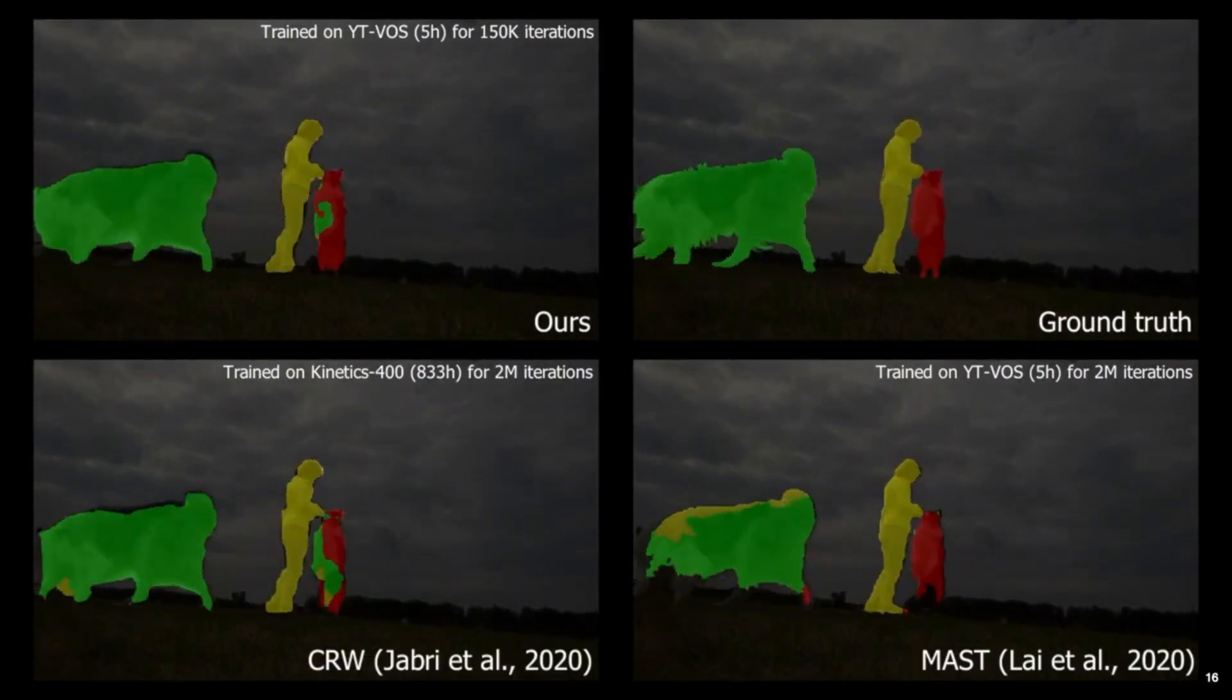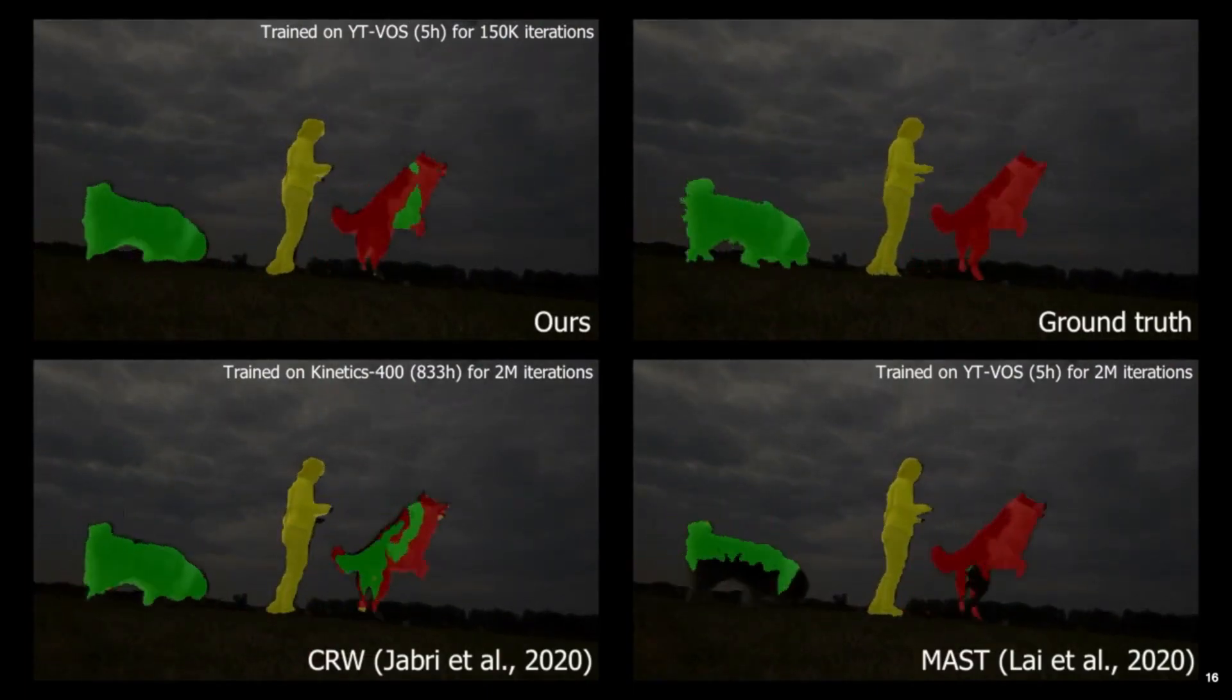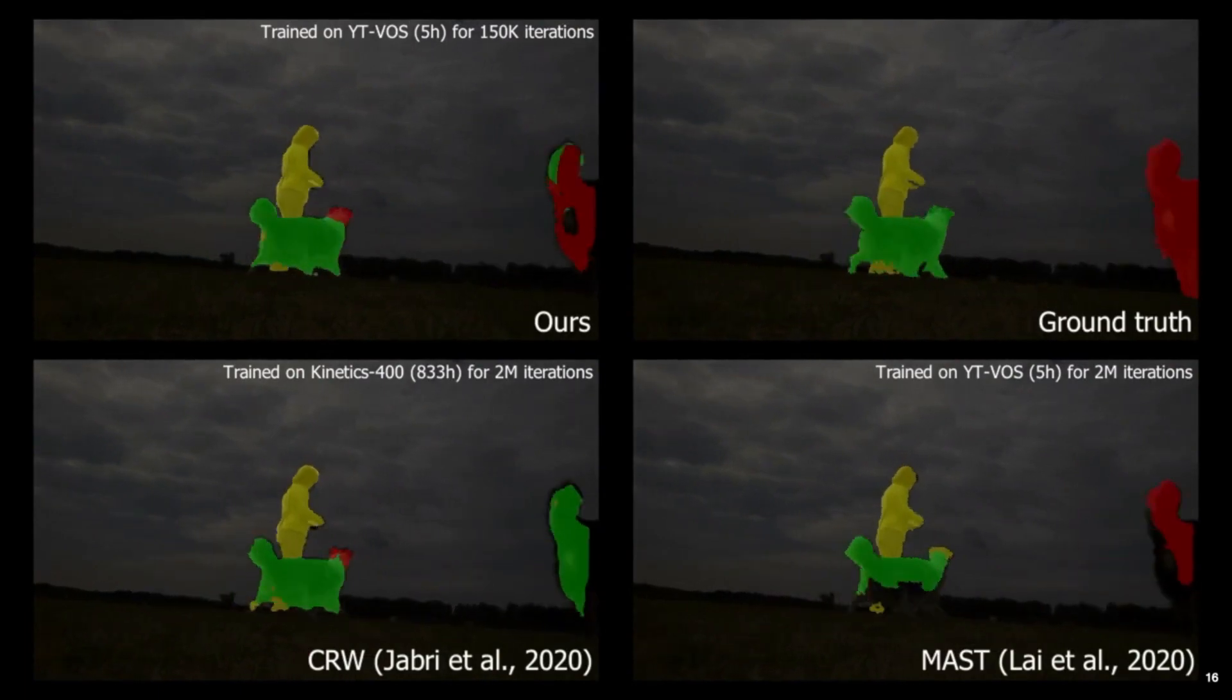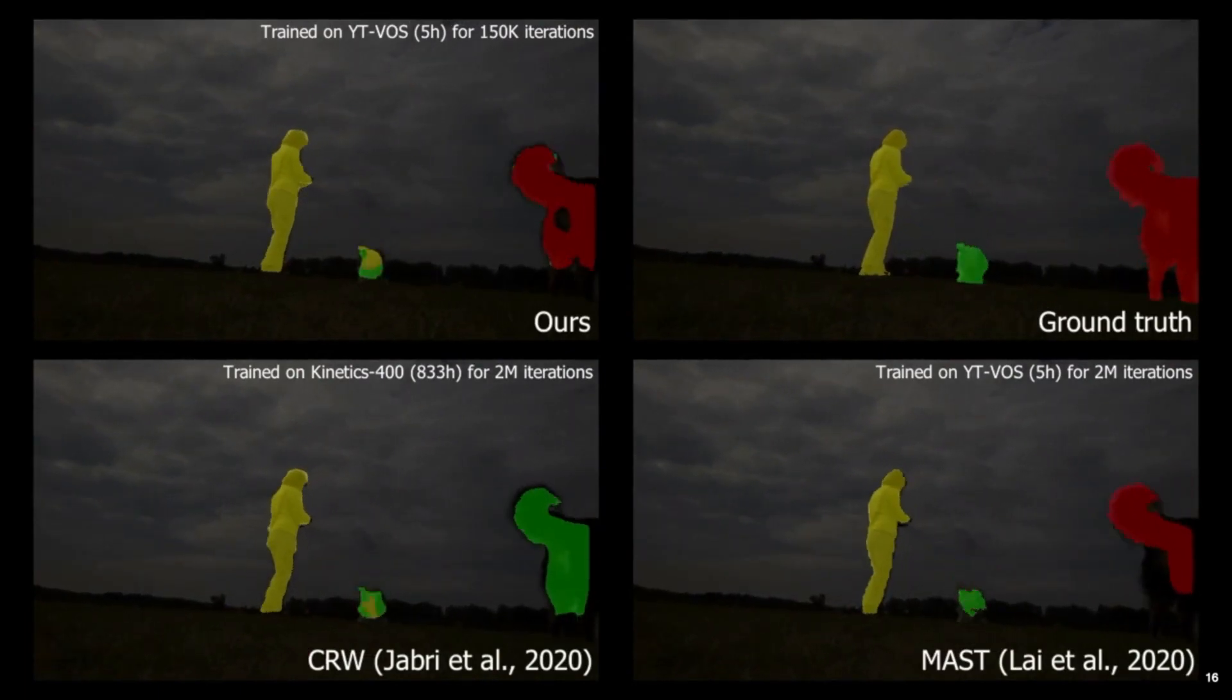Qualitatively, we observe that our method learns feature representations that are robust to ID switches between the tracked objects, as the example with a playing dog on the right here. In the same vein, the learned features exhibit more robustness in establishing semantic relationships between temporally distant frames, as can be visible from the segmentation of the dancer's torso.